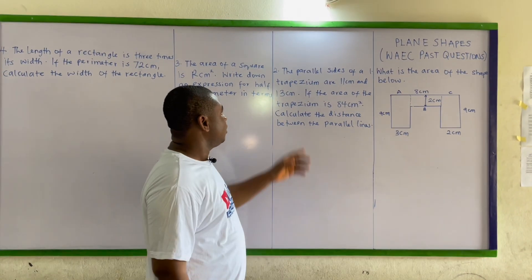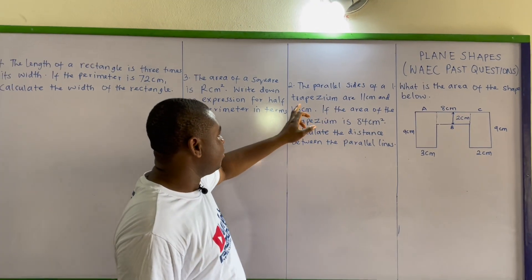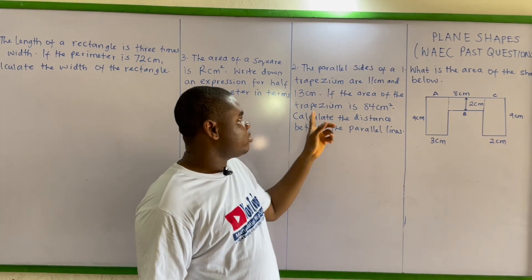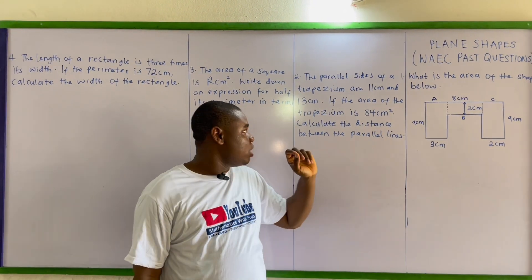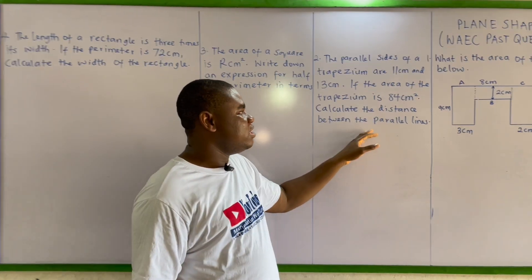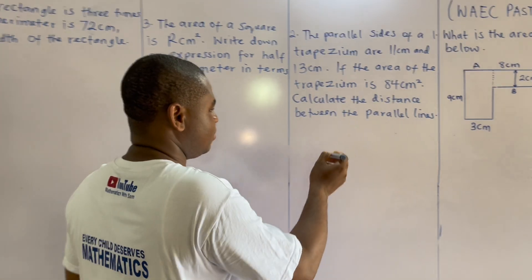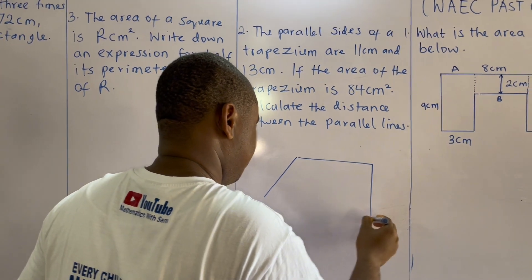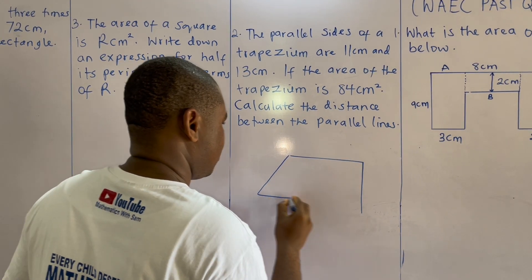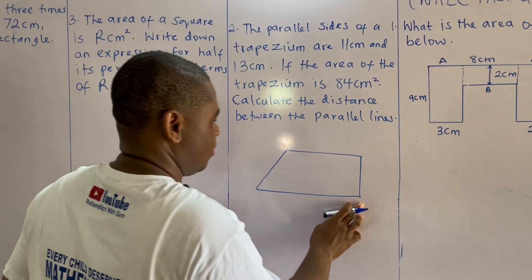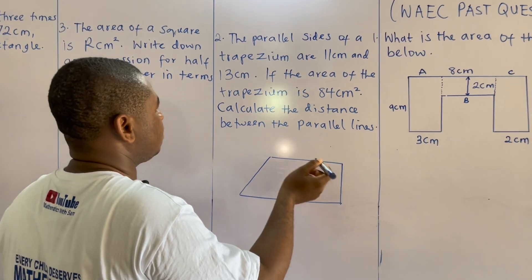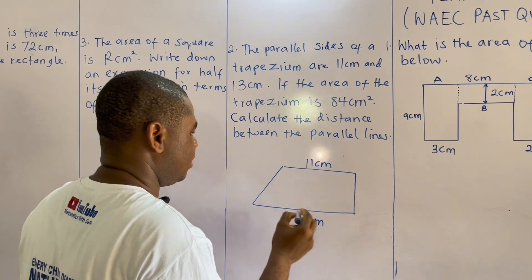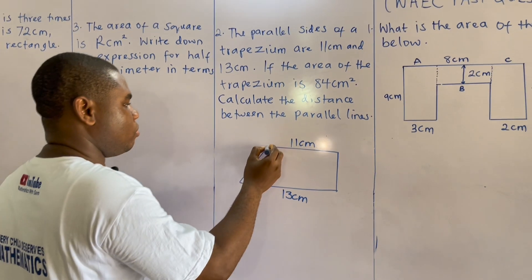Question number two: the parallel sides of a trapezium are 11 centimeters and 13 centimeters. If the area of the trapezium is 84 centimeters squared, calculate the distance between the parallel lines. The trapezium has parallel sides of 11 centimeters and 13 centimeters.